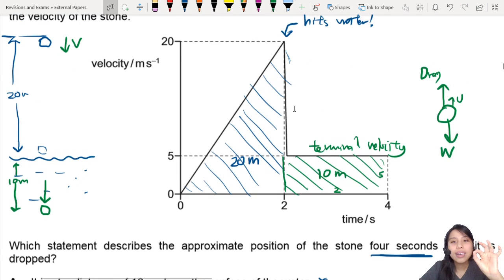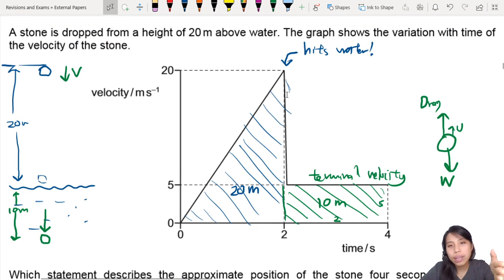The main thing you need to know is that the stone hit the water and went in. That's all you need to know from this graph. So that's all for this question. I will see you in the next one.